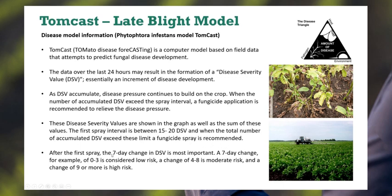After the first spray recommendation, you look at the seven-day change in DSV values. A zero to three over seven days is low risk, four to eight is moderate, and nine or above is high risk. Of course, even at high risk, the control period depends on the type of product you're applying — contact versus systemic — which changes the period of efficacy.